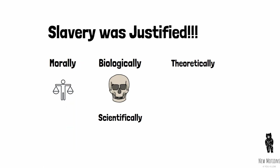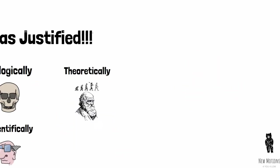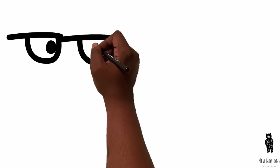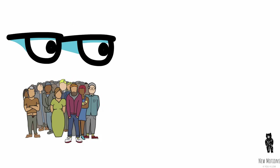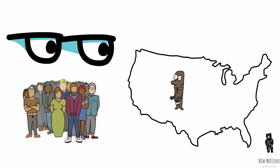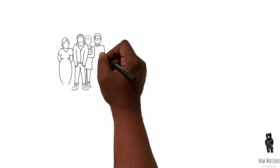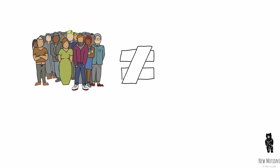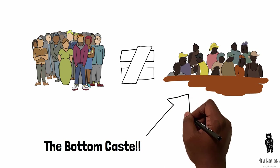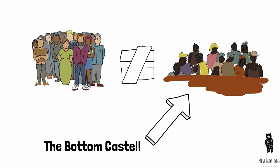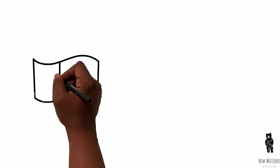And it seems to me that white America must see that no other ethnic group has been a slave on American soil. That is one thing that other immigrant groups haven't had to face. The other thing is that the color became a stigma. American society made the Negro's color a stigma, and that can never be overlooked.